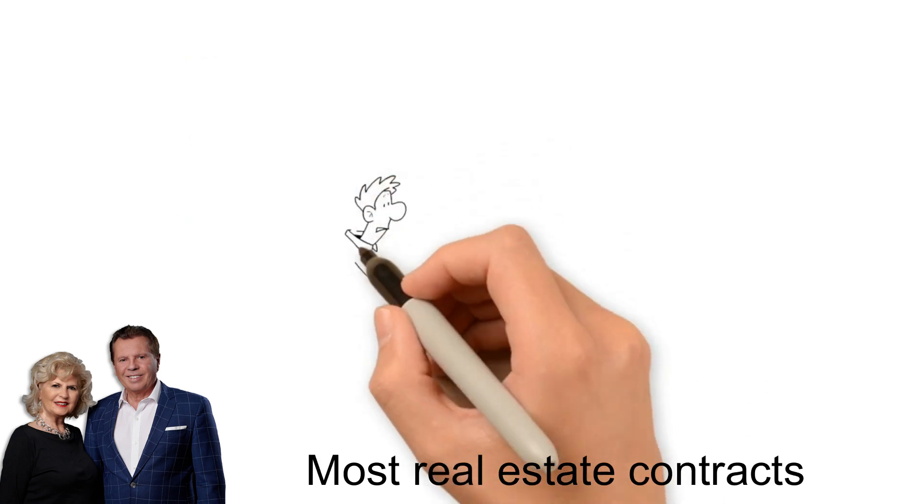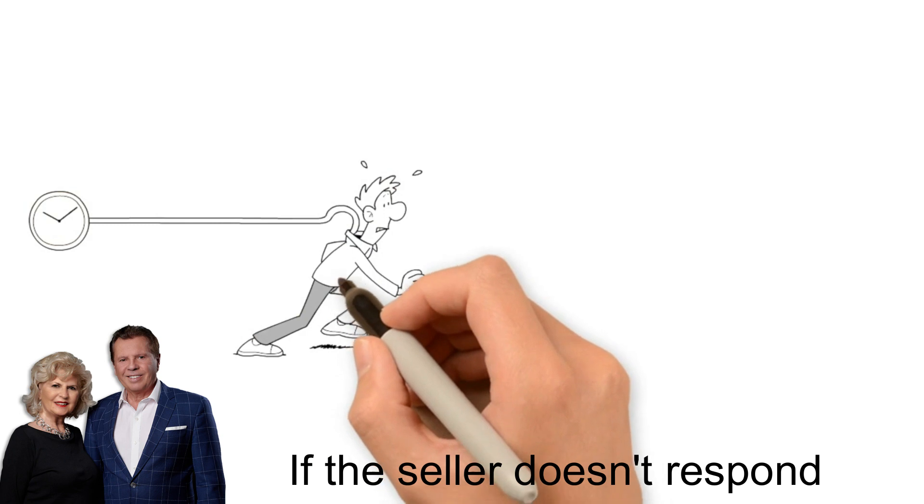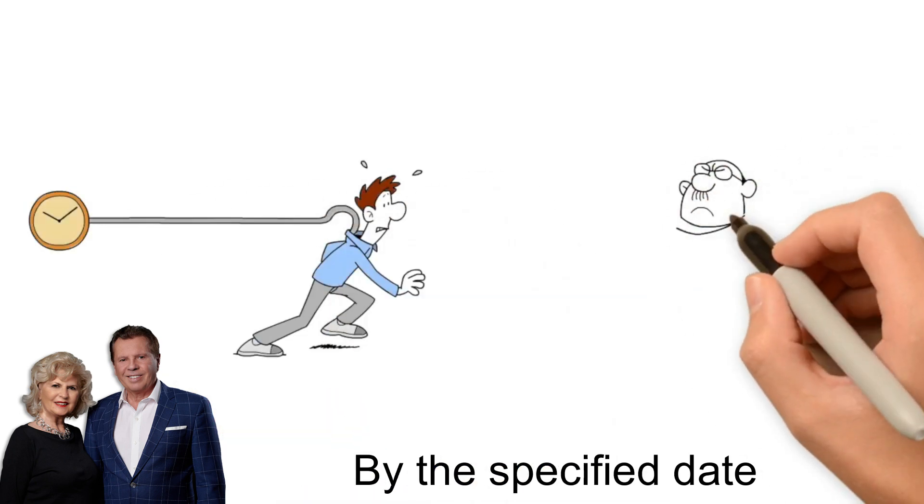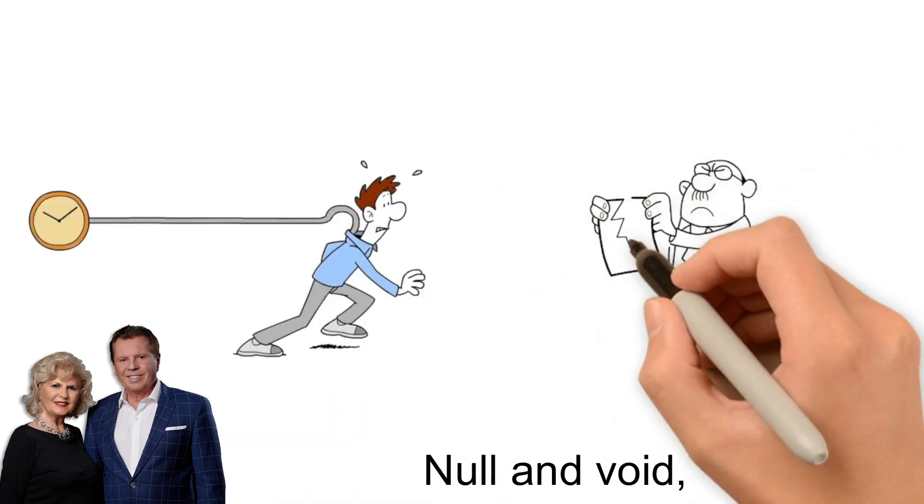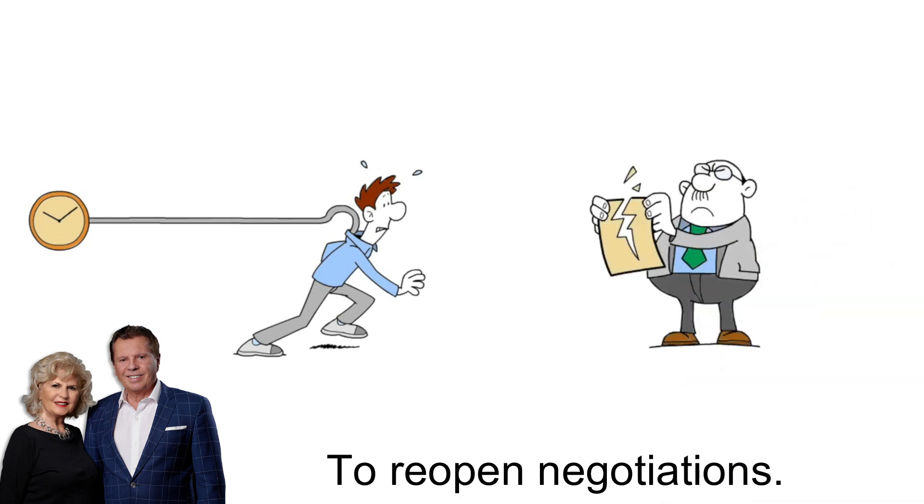Most real estate contracts contain an expiration date. If the seller doesn't respond by the specified date, the agreement becomes null and void unless the buyer agrees to reopen negotiations.